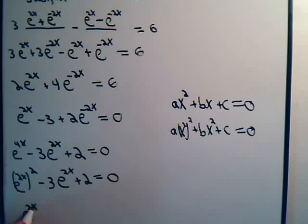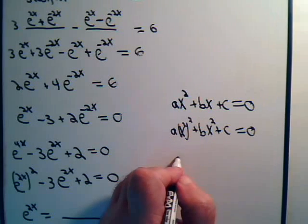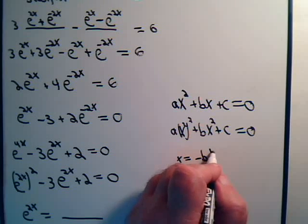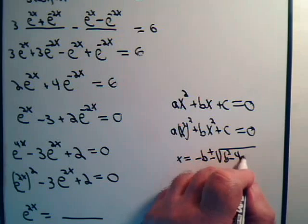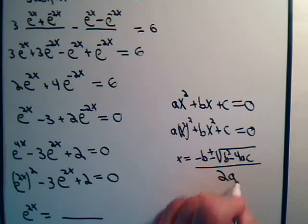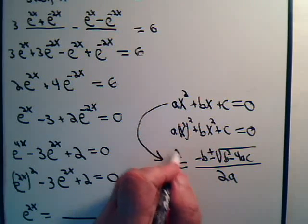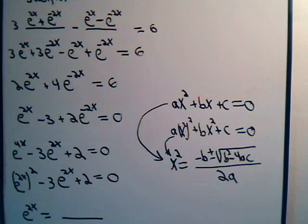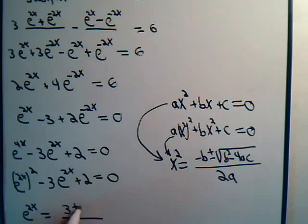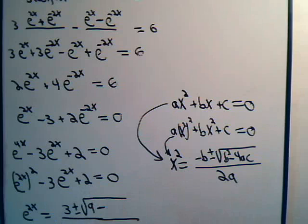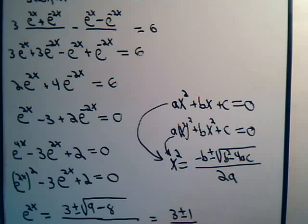So e^(2x), using the quadratic formula, equals: recall x = (-b ± √(b²-4ac)) / (2a). Here b is -3, so -b is +3; b² is 9; 4ac is 4 times 1 times 2, which is 8; and 2a is just 2. So we get (3 ± √(9-8)) / 2, which equals (3 ± 1) / 2.